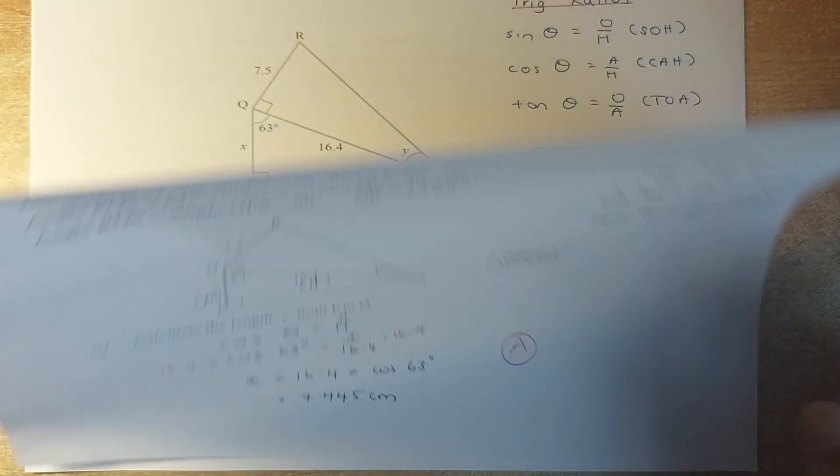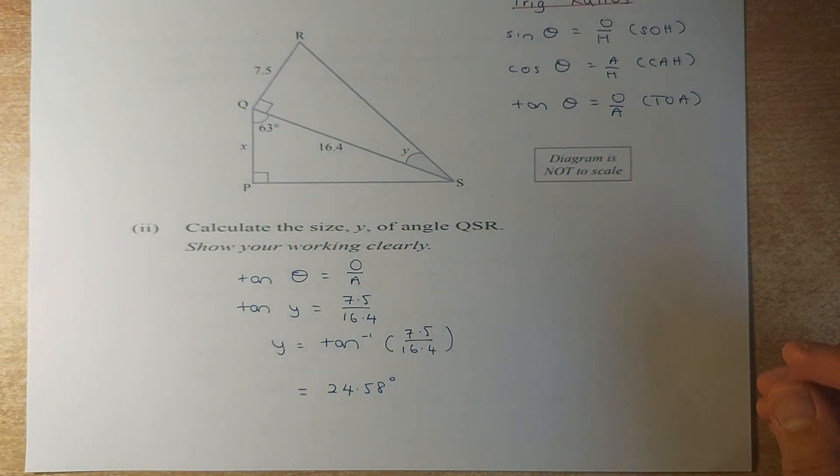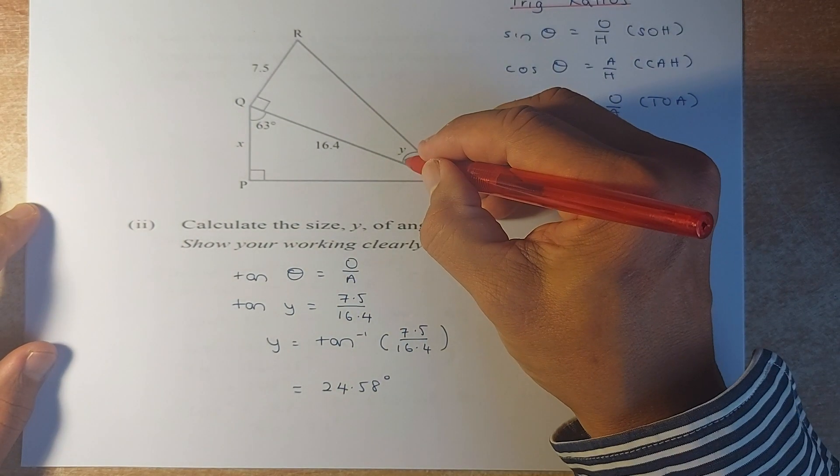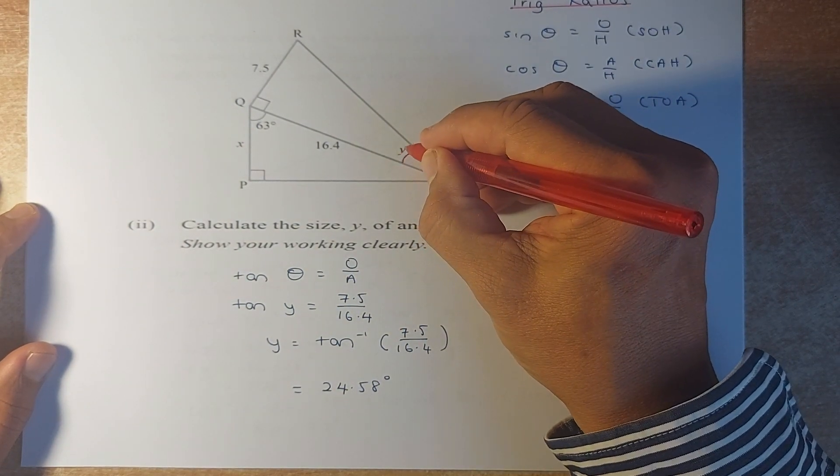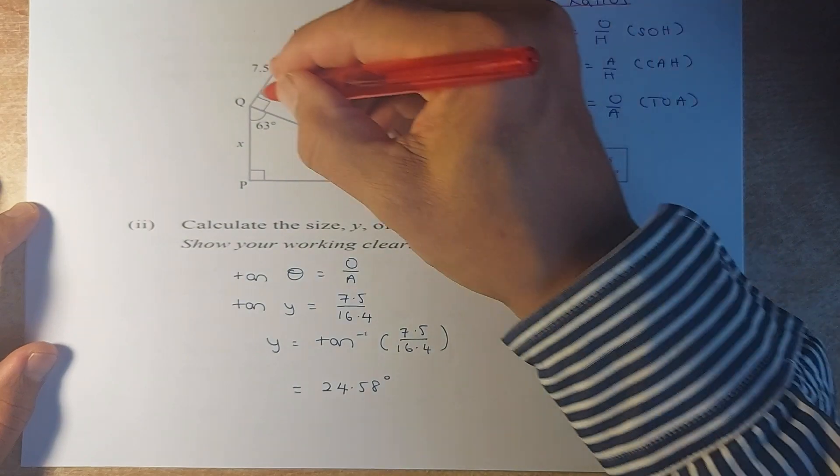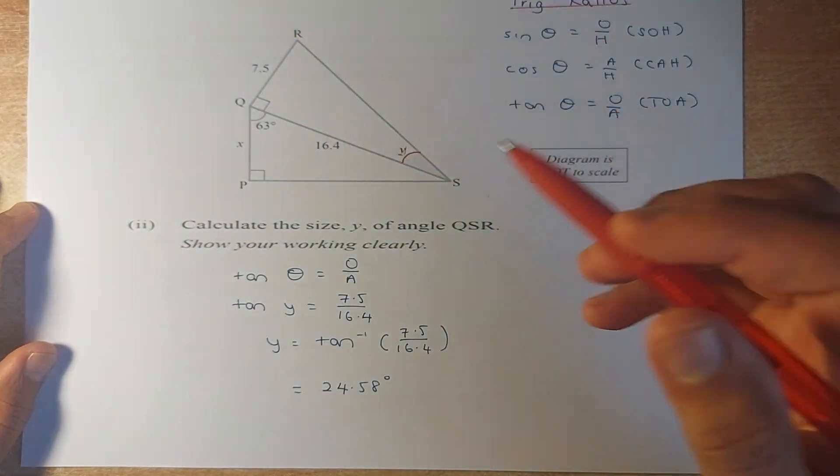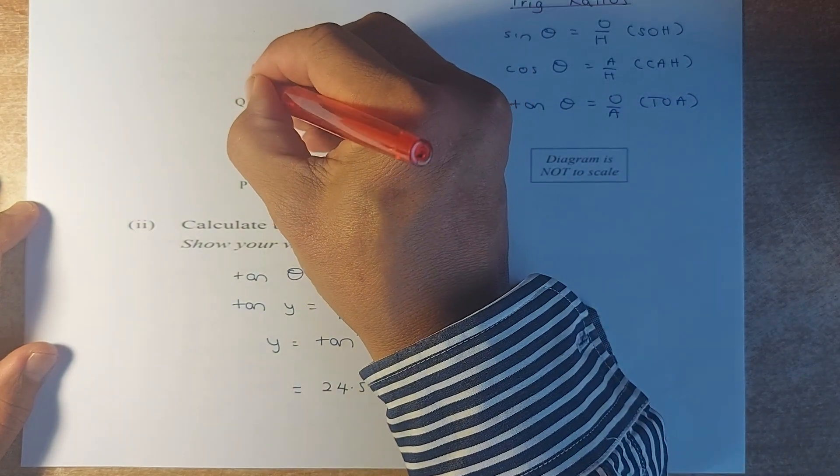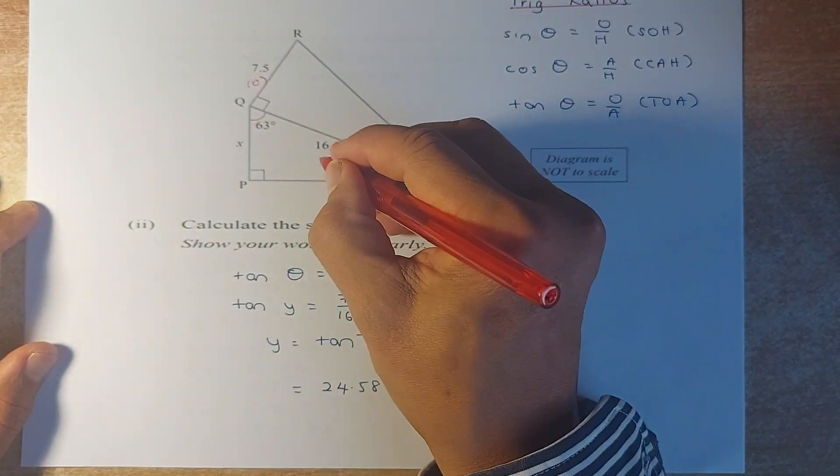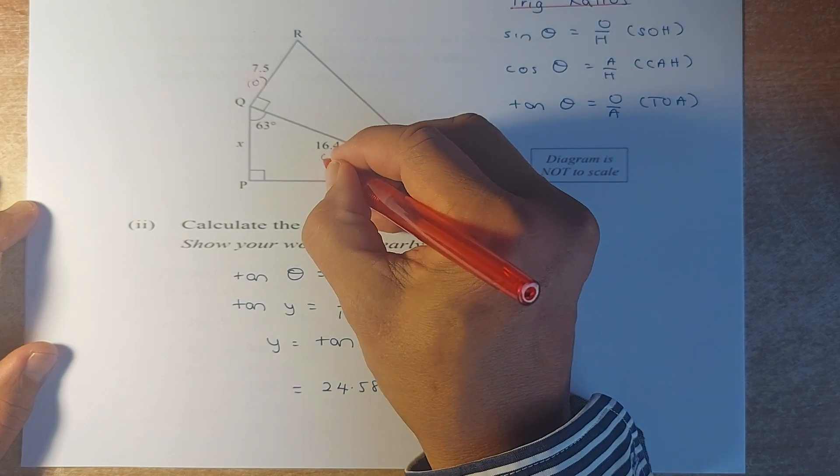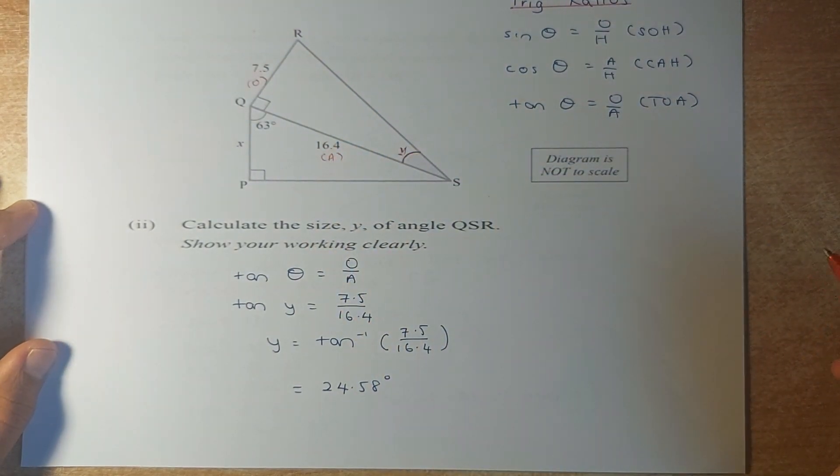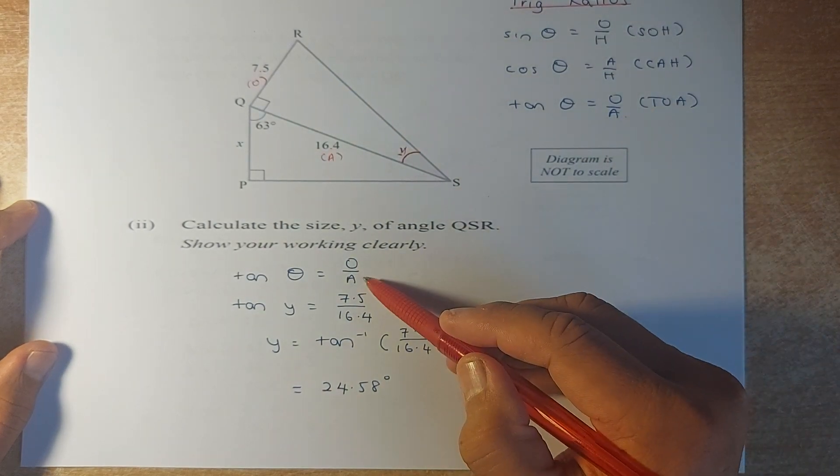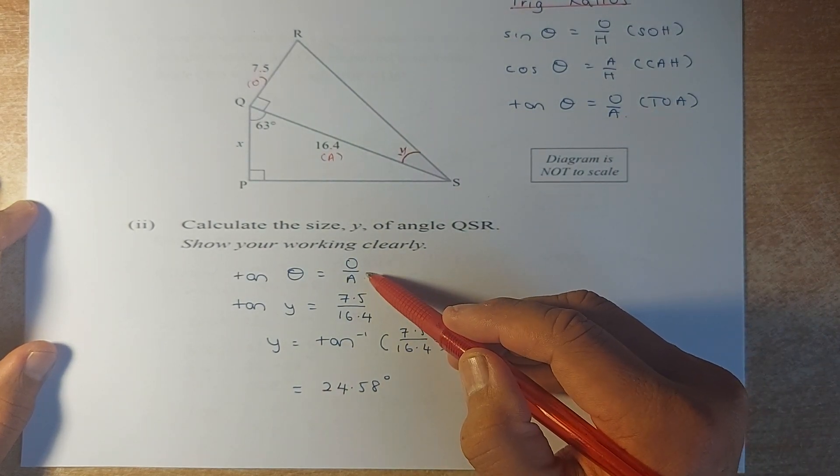We shall now look at question A, part B. The same triangles. This time, they want you to find angle Y. So now we are looking at this right-angle triangle. The length is 7.5, so you need to label them. So this is opposite, 7.5 is opposite and 16.4 is your adjacent. So now O and A, you look at the formula, you have to use the tangent formula. So tangent theta is opposite over adjacent.